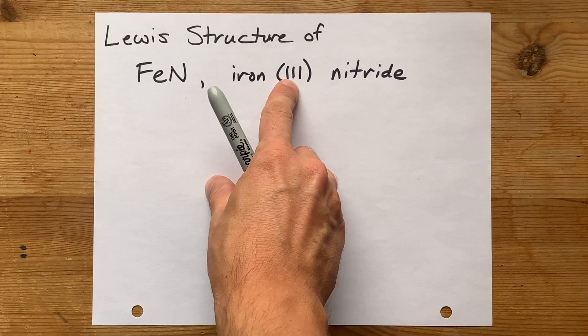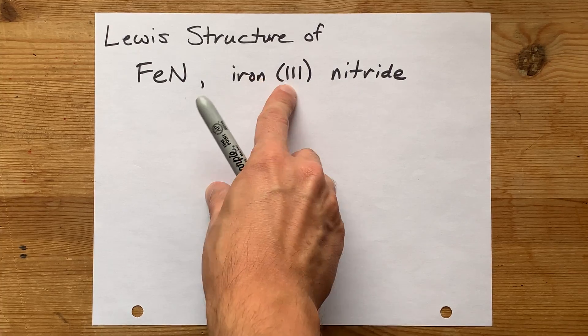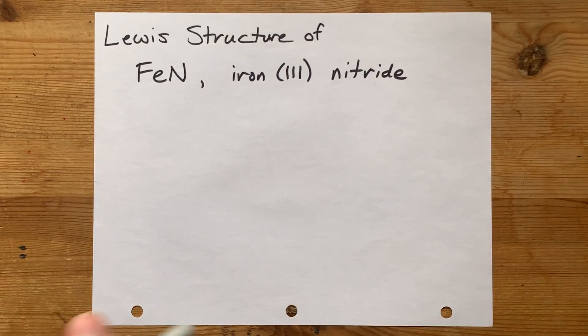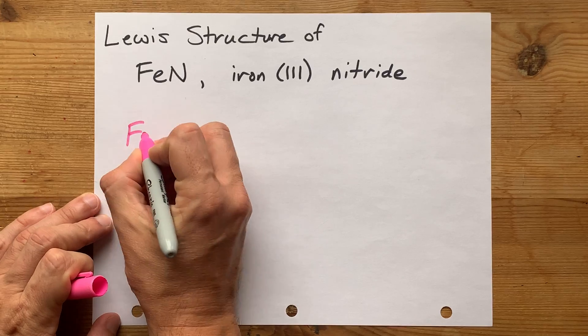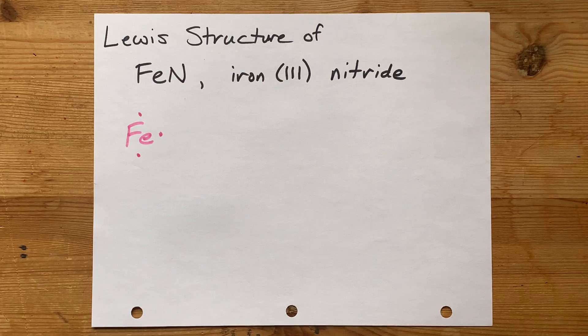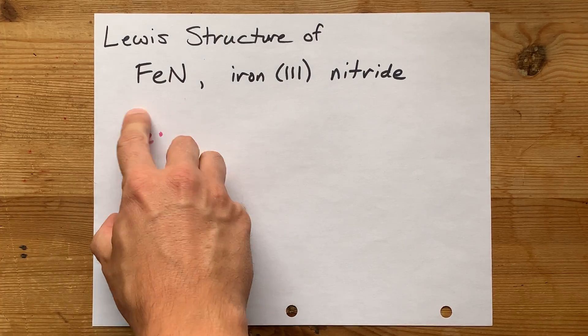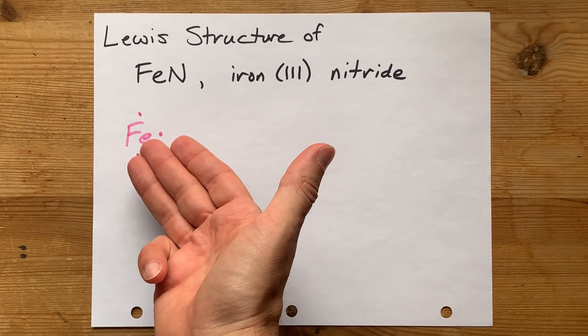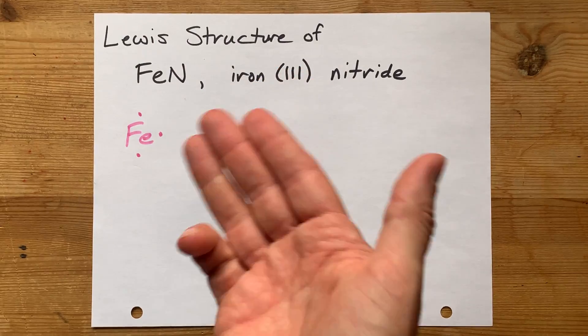If the charge on iron here had been 2, you know, iron II nitride, then you'd draw it with 2 valence electrons. But here, it's clearly 3. We're going to draw it with 1, 2, 3 valence electrons. The loss of these 3 electrons is what's going to make this into the iron 3-plus ion.